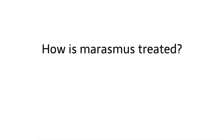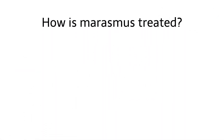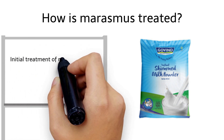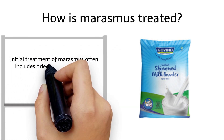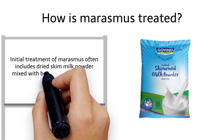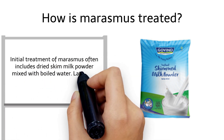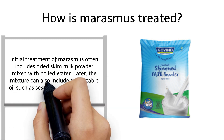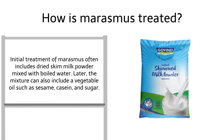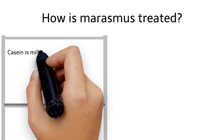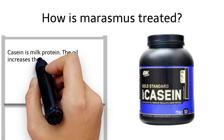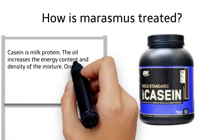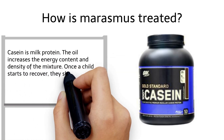Initial treatment of Marasmus often includes dried skim milk powder mixed with boiled water. Later, the mixture can also include a vegetable oil such as sesame, casein, and sugar. Casein is milk protein; the oil increases the energy content and density of the mixture.